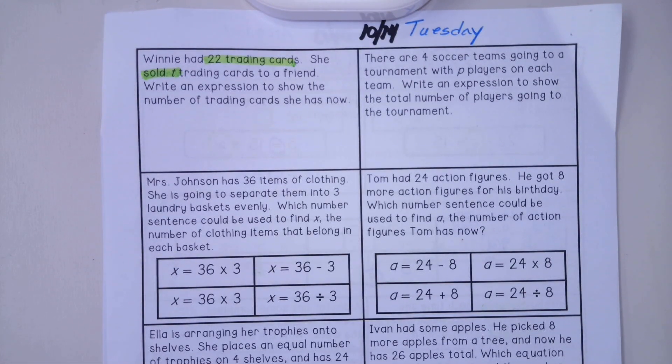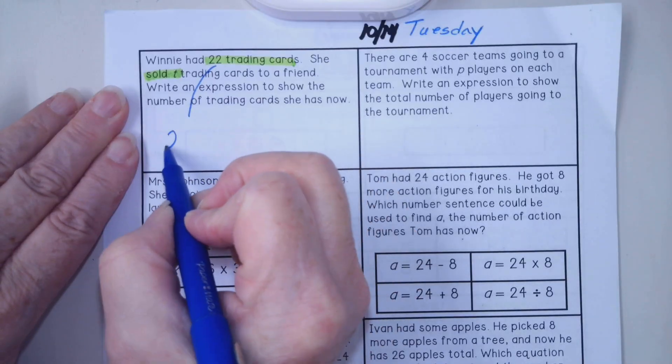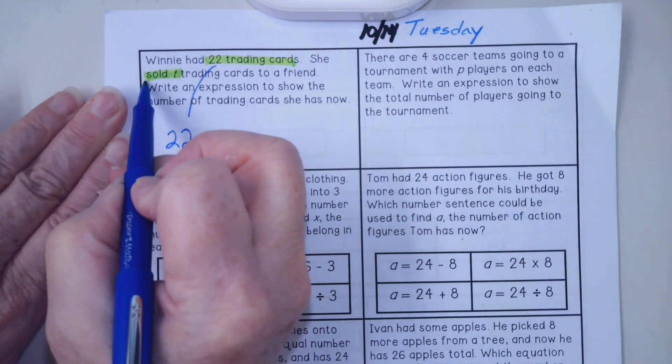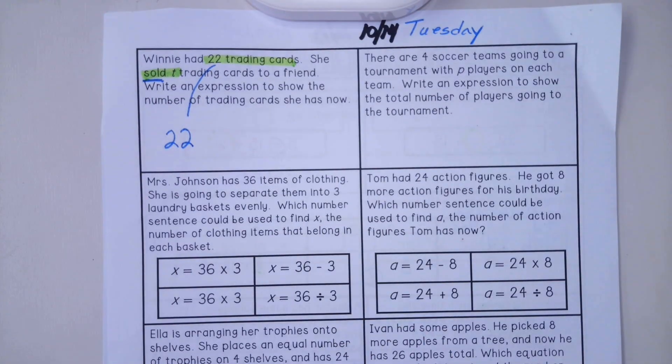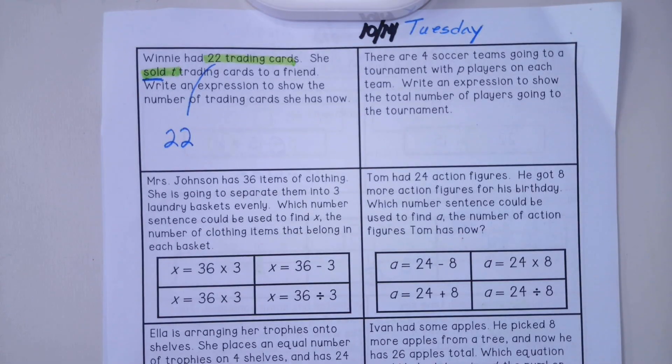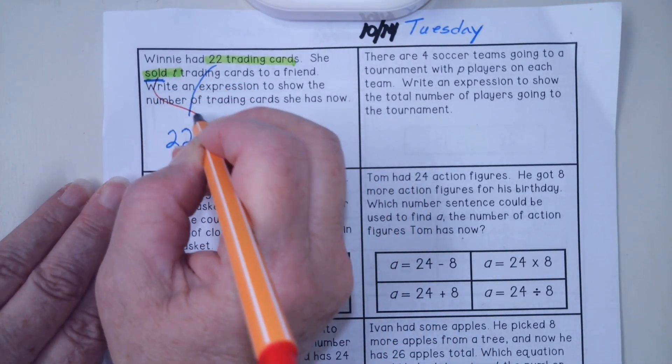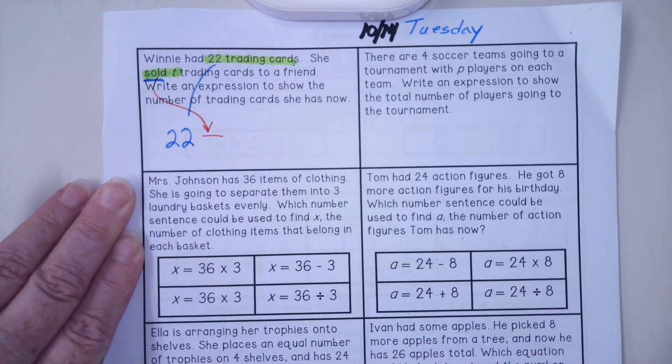Let's start with the 22 because that's how many she started with. Now what does it mean to sell something? Is it addition or subtraction? We are giving it away so we should have less. That is going to end up being subtraction.